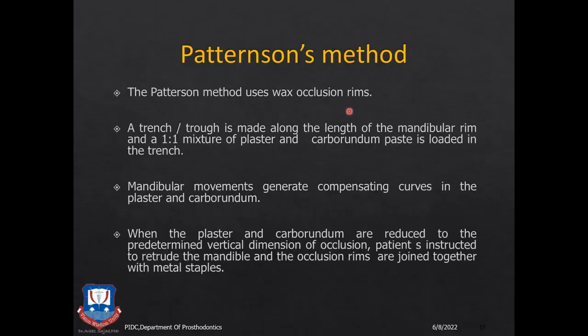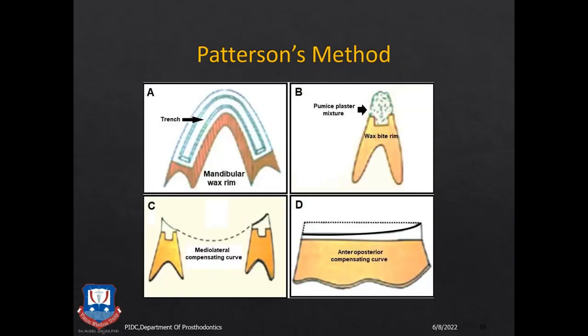The second functional method is the Patterson method. This used wax occlusal rims — first a trench or trough was made along the length of the mandibular rim, and a one-to-one mix of plaster and carborundum paste was packed into this trough. The patient was then asked to generate mandibular movements — protrusive and excursive — and these continuous functional movements generated compensating curves in the occlusal surface of the mandibular rim, like the curve of Spee and curve of Wilson.